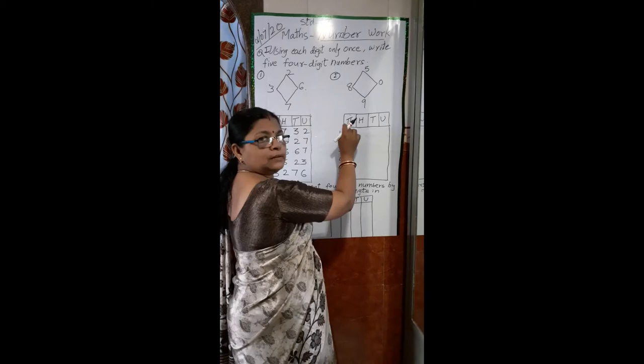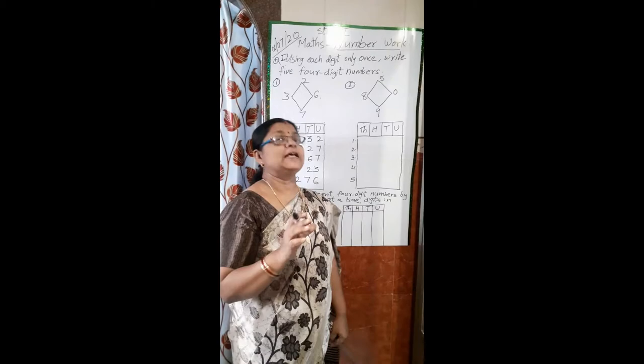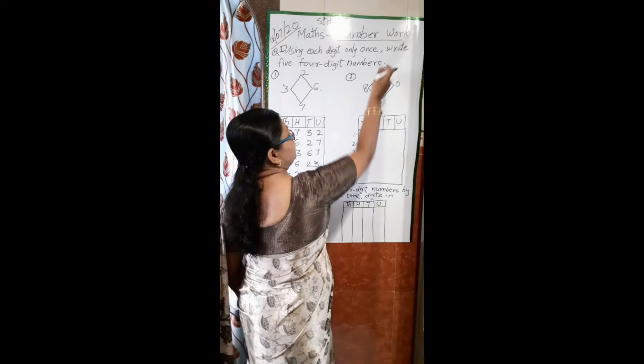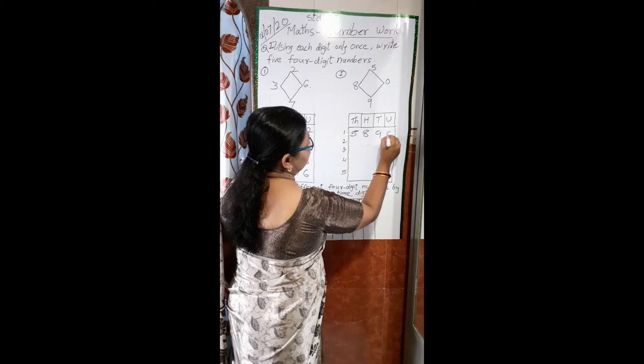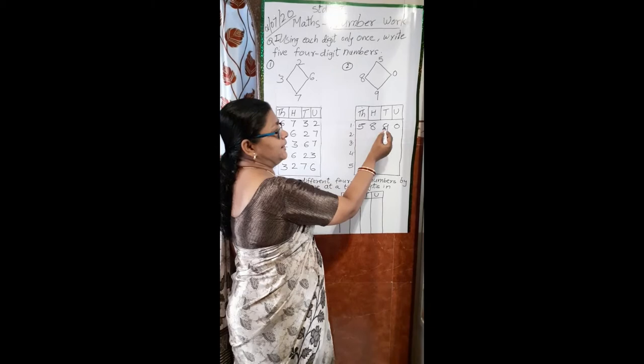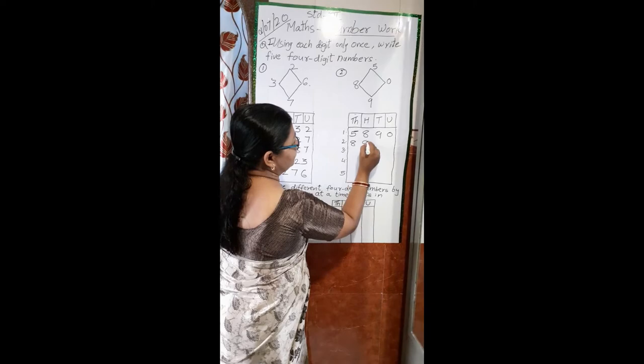Before I told you all that zero should not come in the thousands place. If zero comes in the thousands place, that will be a three-digit number, not a four-digit number. So let's take 5 in the thousands place, 8 in the hundreds place, 9 in the tens place, and 0 in the units place. We will read this number as 5890.